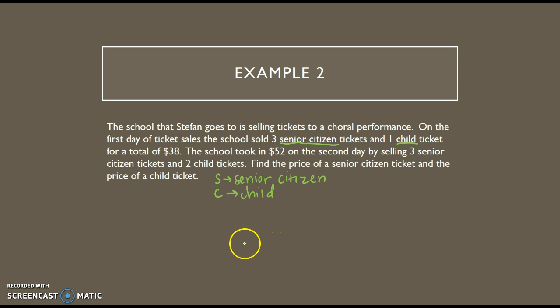All right, then it gives me two sets of information. I've got one day that ended up being $38 and one that was $52. So the equation to go with the $38 was three senior citizen and one child. So we can say 3s plus 1c has to equal that $38.